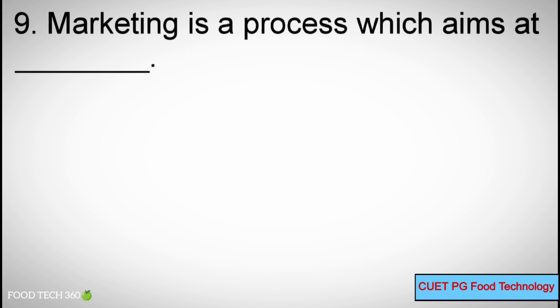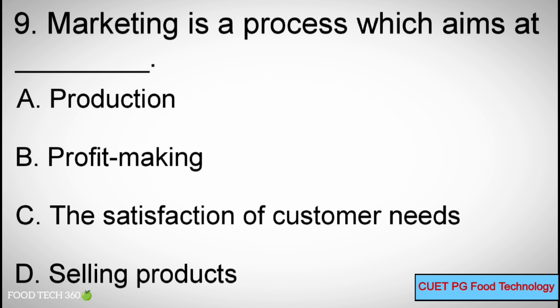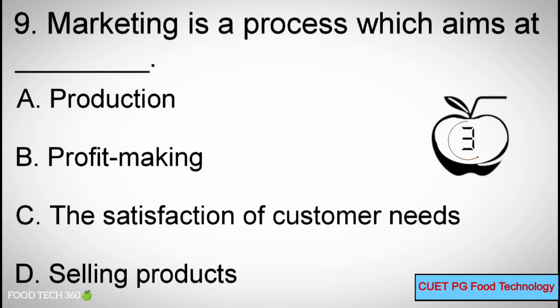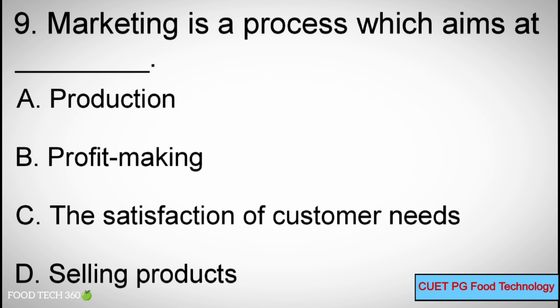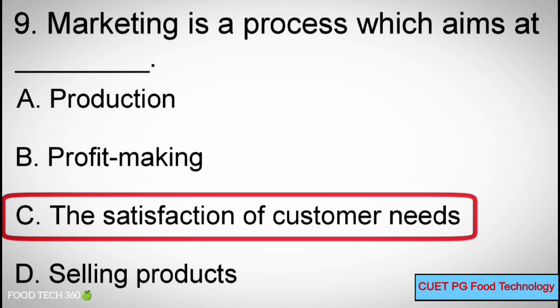Q9. Marketing is a process which aims at — Options: A. Production. B. Profit making. C. Satisfaction of customer needs. D. Selling products. Correct answer: C. Satisfaction of customer needs.